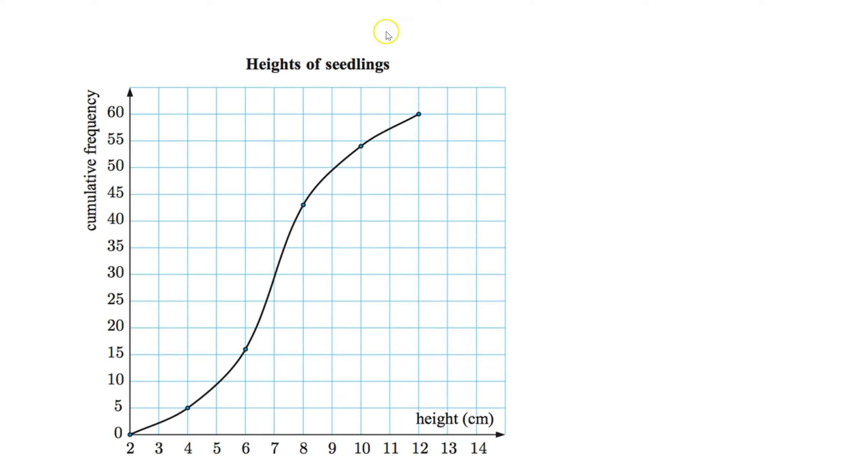So let's look at this example here. We're talking about the height of seedlings that range from 2 to 14. I know how many total seedlings I have, which is 60, because that's where my max is. Now if I want to find stuff like the median, well if there's 60 total, 30 would be the median.